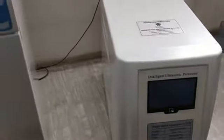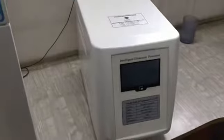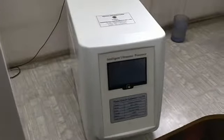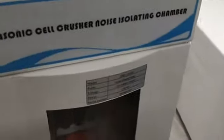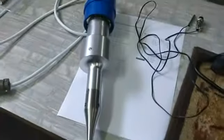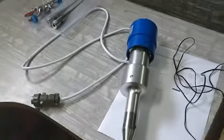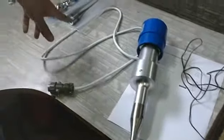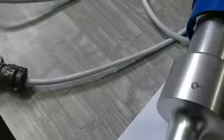First of all, these probes can be put in one transducer only. The first thing we are going to see is how we can change the probes. This is our transducer, and now we are going to demonstrate how we can change the probe. Here you can see the customer has purchased 2mm dia, 3mm dia, and 6mm dia probes.